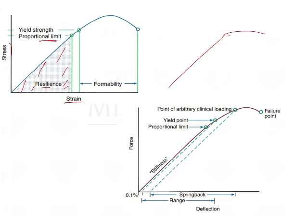After the material has reached the yield strength, when more force is applied, the material is no longer going to behave in an elastic way — it is going to behave in a plastic way, meaning it will undergo deformation. When the material undergoes deformation, it becomes formable, and that property is known as formability.